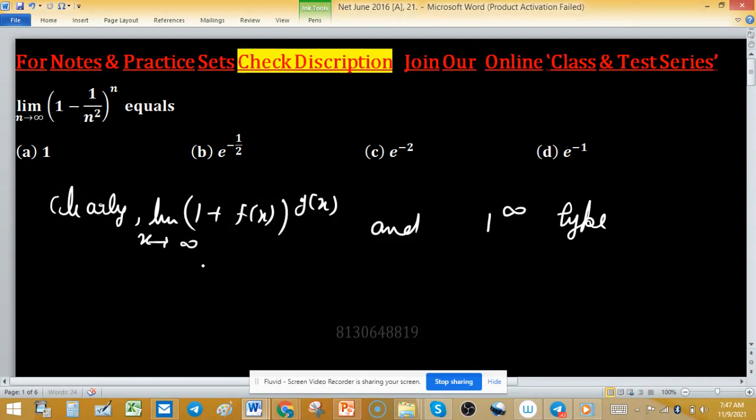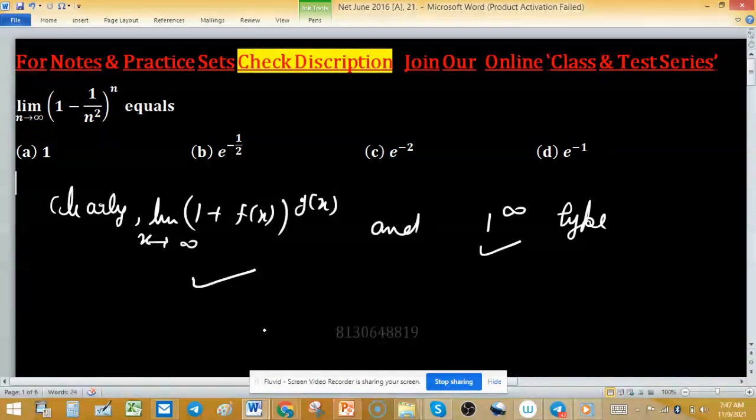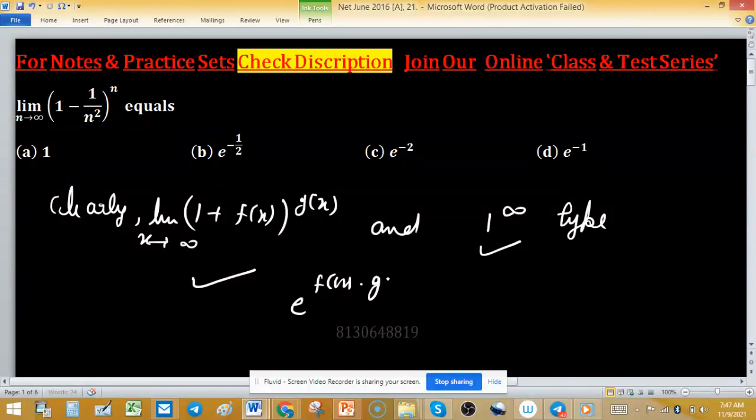Whenever expression is given in this form and limit is of the type 1 raised to the power infinity, this limit is easily evaluated with the form e raised to the power f(x) into g(x) when limit of x tends to infinity.